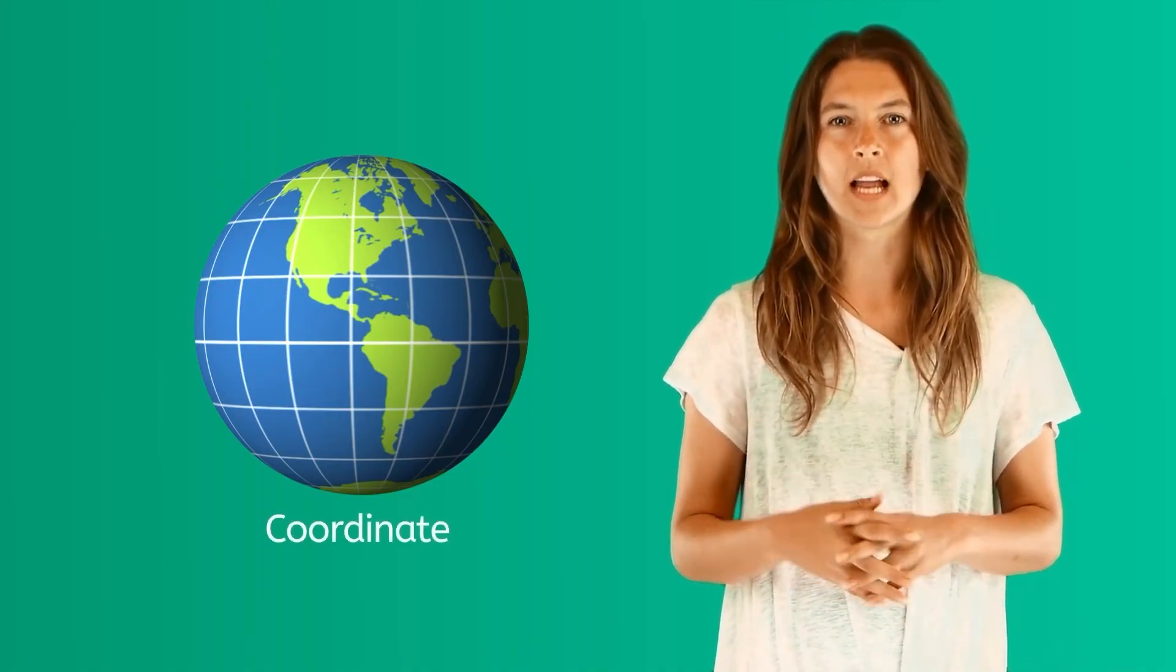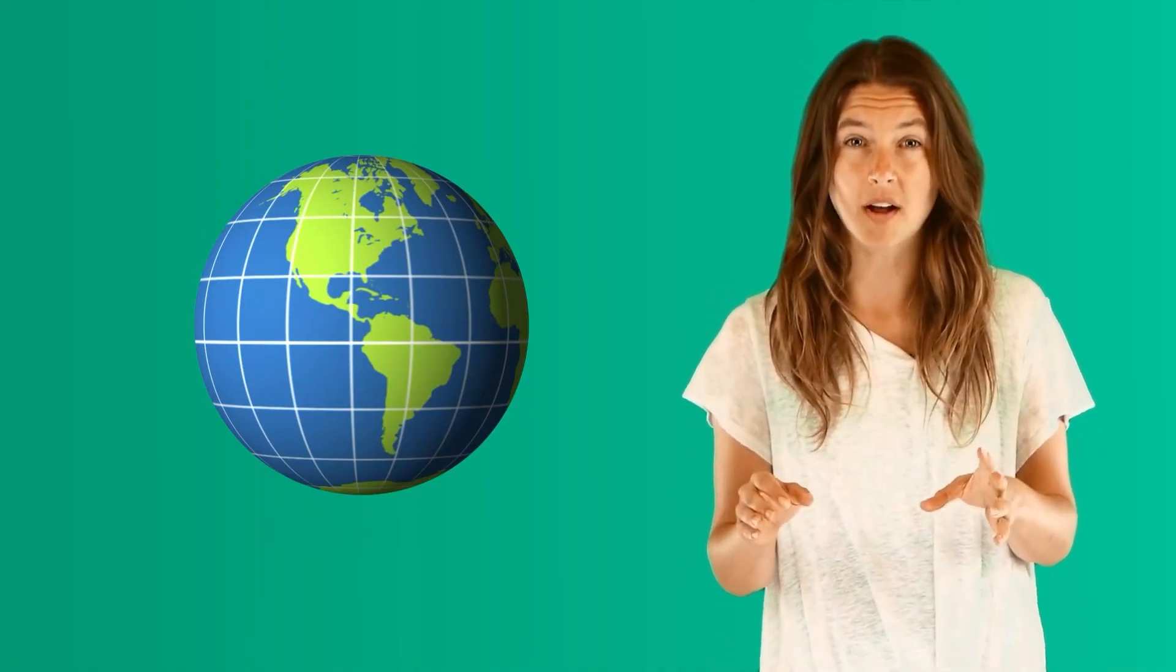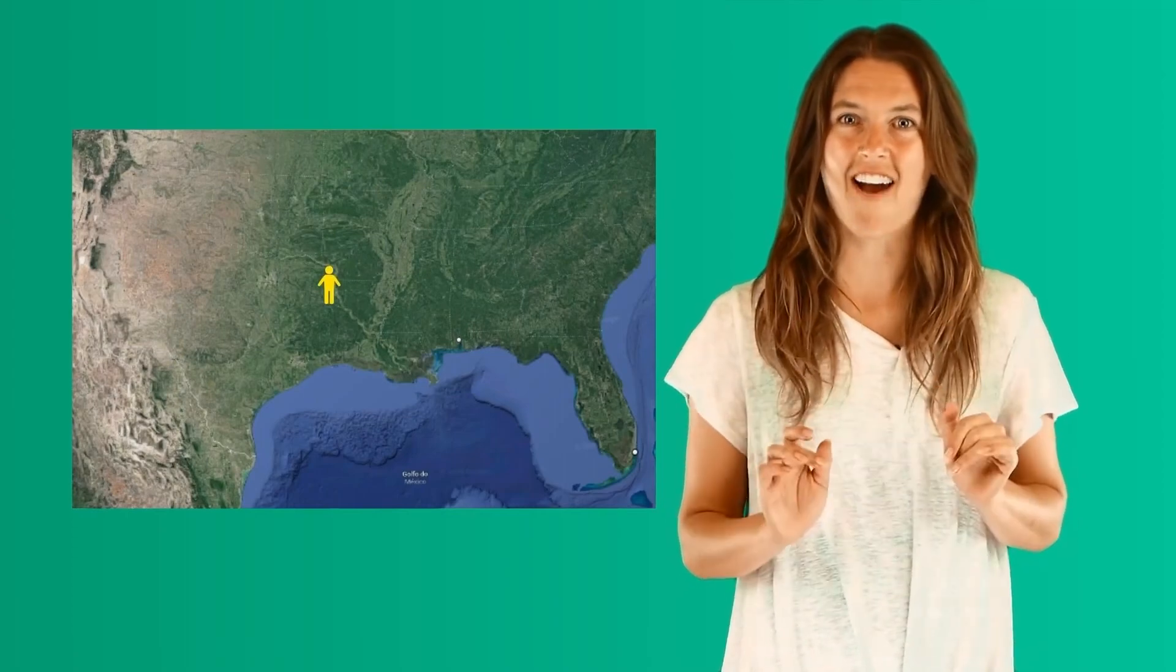These lines of longitude and latitude create a neat grid around the world. Where the lines meet is a point called a coordinate. Now, a coordinate tells you the exact spot in the world where you are located right now.